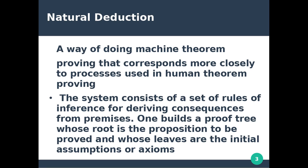The system consists of a set of rules of inference for deriving consequences from premises. We are going to discuss the premises, proof consequences, and the consequences derived using rules of inference. One builds a proof tree whose root is the proposition to be proved and whose leaves are the initial assumptions or axioms.